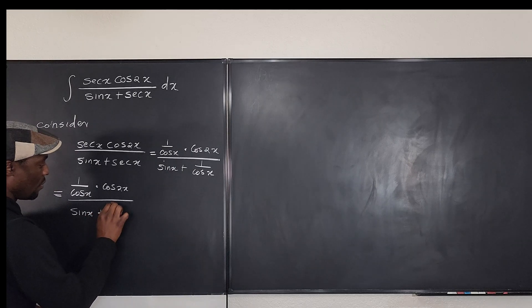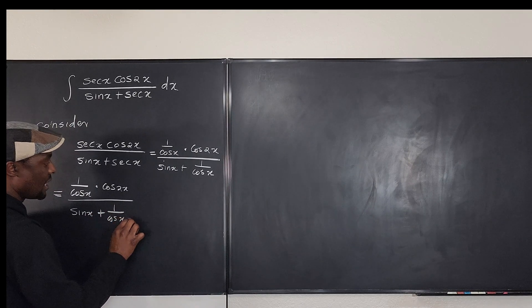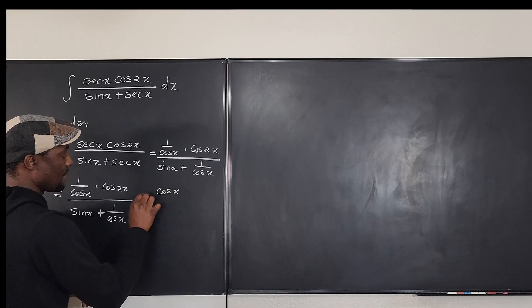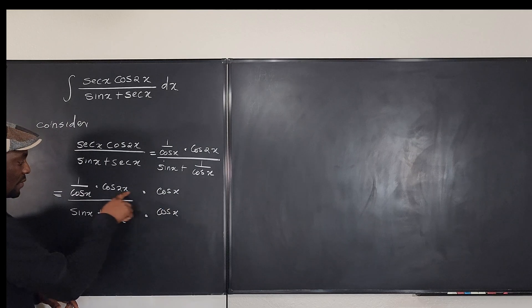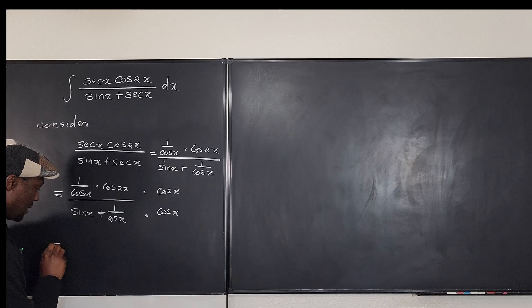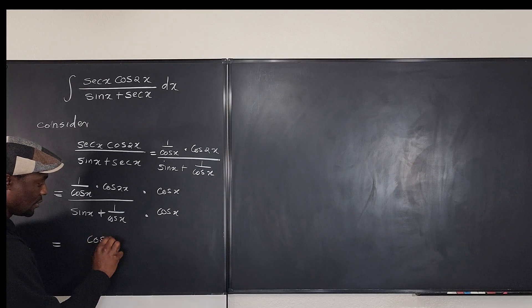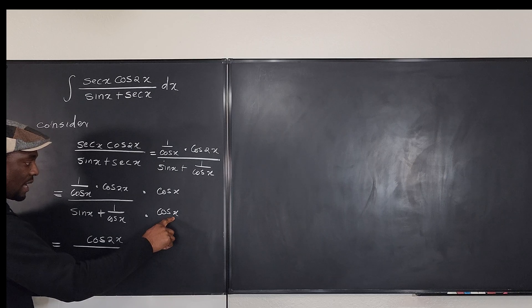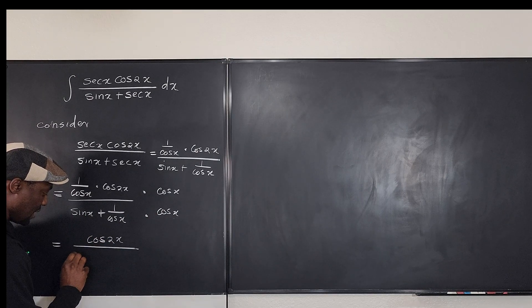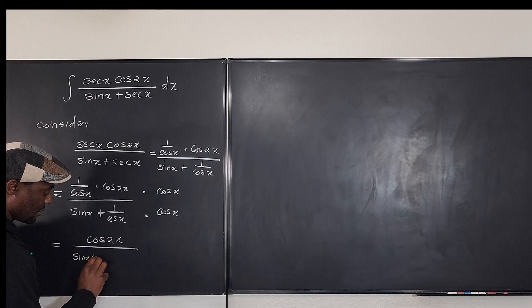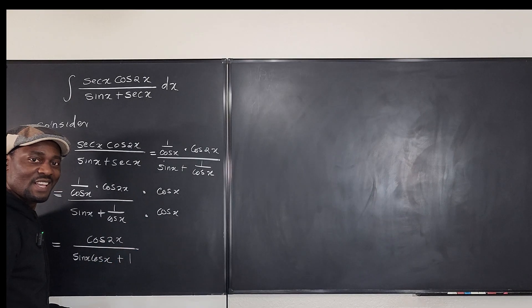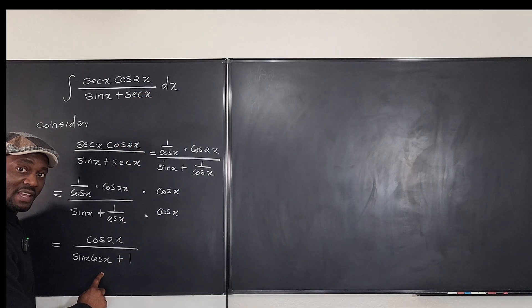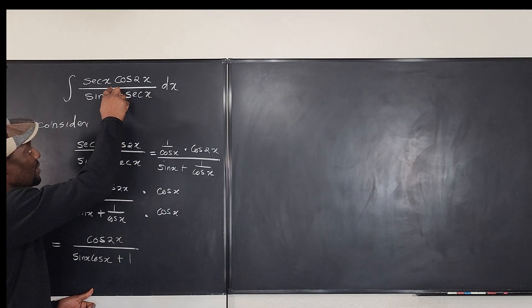If I multiply the top by cosine x, the cosines cancel and I just have 1, leaving cosine 2x on top. Multiplying the denominator: sine x · cosine x gives sine x cosine x, and (1/cosine x) · cosine x gives just 1. So the expression becomes cosine 2x over (sine x cosine x + 1).